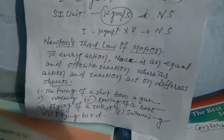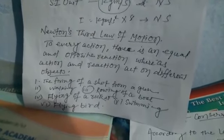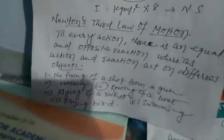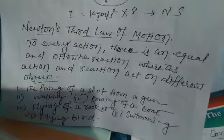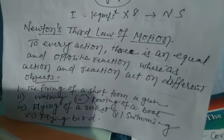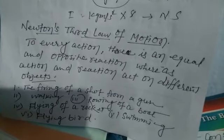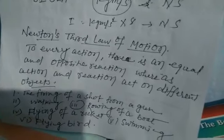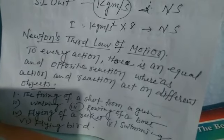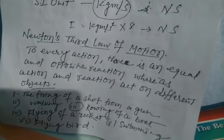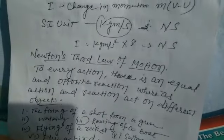Newton's third law of motion: the first law defines inertia, the second law defines momentum, and the third law defines conservation of momentum. Newton's third law states: to every action there is an equal and opposite reaction, where action and reaction act on different objects in opposite directions. Examples include the firing of a shot from a gun, walking, rowing a boat, flying of a rocket, swimming, and a flying bird.